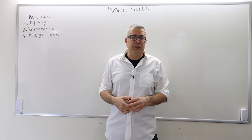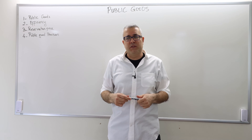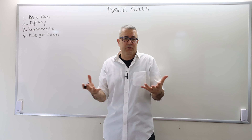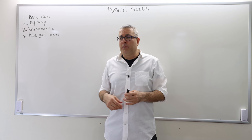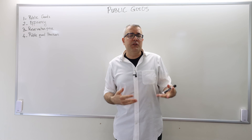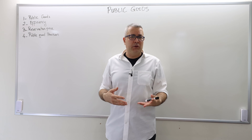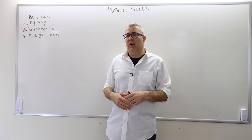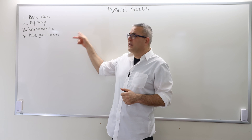But sometimes governments do not provide the public good, probably because it's not on their priority list. In those instances, the community — the agents, the consumers, the people in that neighborhood or region — should step in and put some money into that public good project. So then the question is: who is going to provide, who is going to contribute how much for the financing of this public good? And what are the mechanisms to determine who is going to provide and who is not?